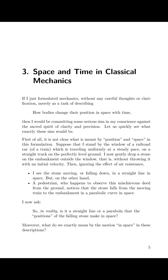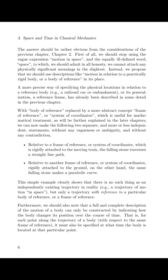Moreover, what do we exactly mean by the motion in space in these descriptions? The answer should be rather obvious from the considerations of the previous chapter, Chapter 2. First of all, we should stop using the vague expression 'motion in space' and the equally ill-defined word 'space,' to which we should admit in all honesty we cannot attach any physically significant meanings in the slightest. Instead, we propose that we should use descriptions like 'motion in relation to a practically rigid body or a body of reference' in its place.